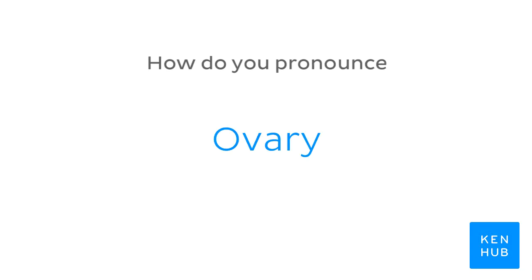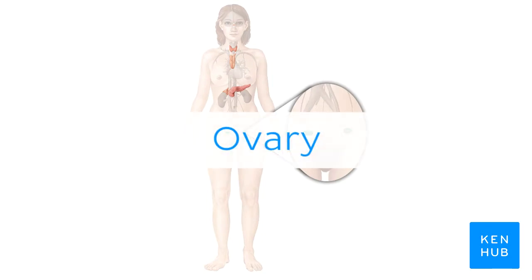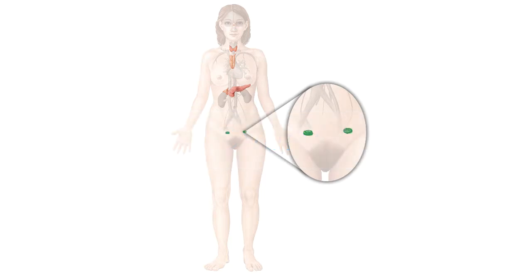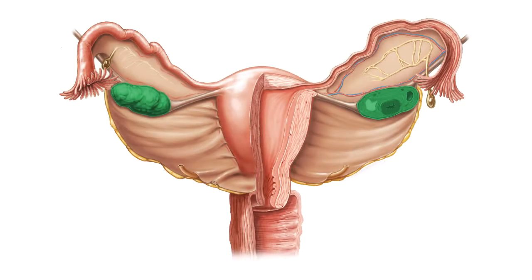How do you pronounce ovary? Ovary. And to help you memorize this term, here are some additional images. We selected them for you from our Atlas of Human Anatomy showing this structure highlighted in green.